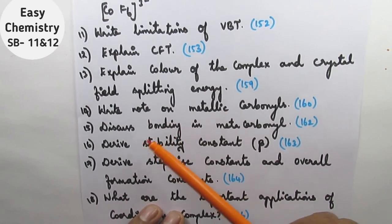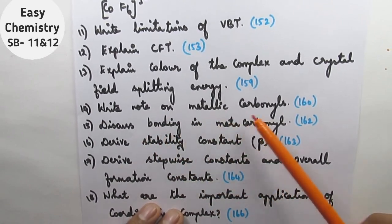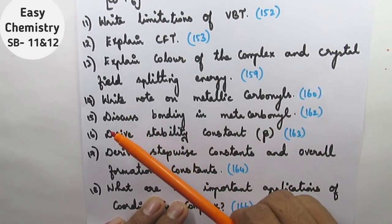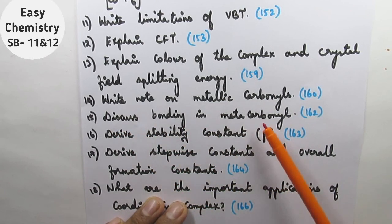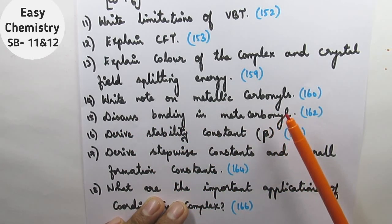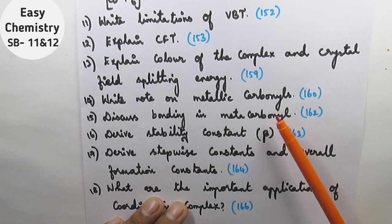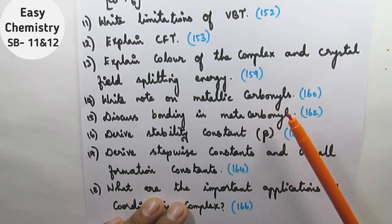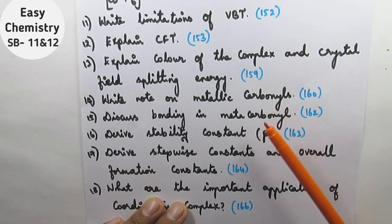Question number 14: write a note on metal carbonyls. Question number 15: discuss bonding in metal carbonyls. The metal's primary valence is zero — oxidation state is zero. Coordination compounds with CO — the metal-CO bonding involves sigma and pi interactions. We will learn this in detail. This is very important.